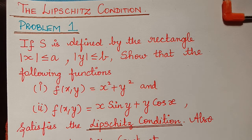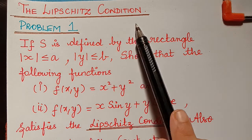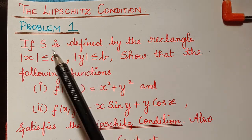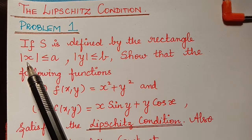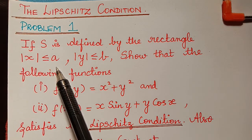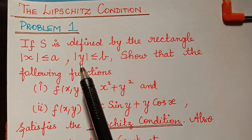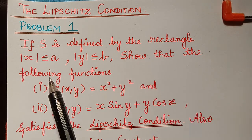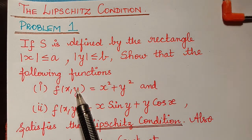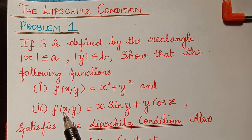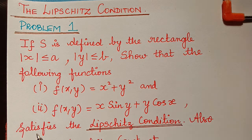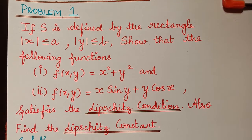Hello students. Under the topic Lipschitz condition, this is the first problem. If capital S is defined by the rectangle — modulus of x less than or equal to a, modulus of y less than or equal to b — show that the following functions f(x,y) = x² + y² and f(x,y) = x sin y + y cos x satisfy the Lipschitz condition. Also find the Lipschitz constant.